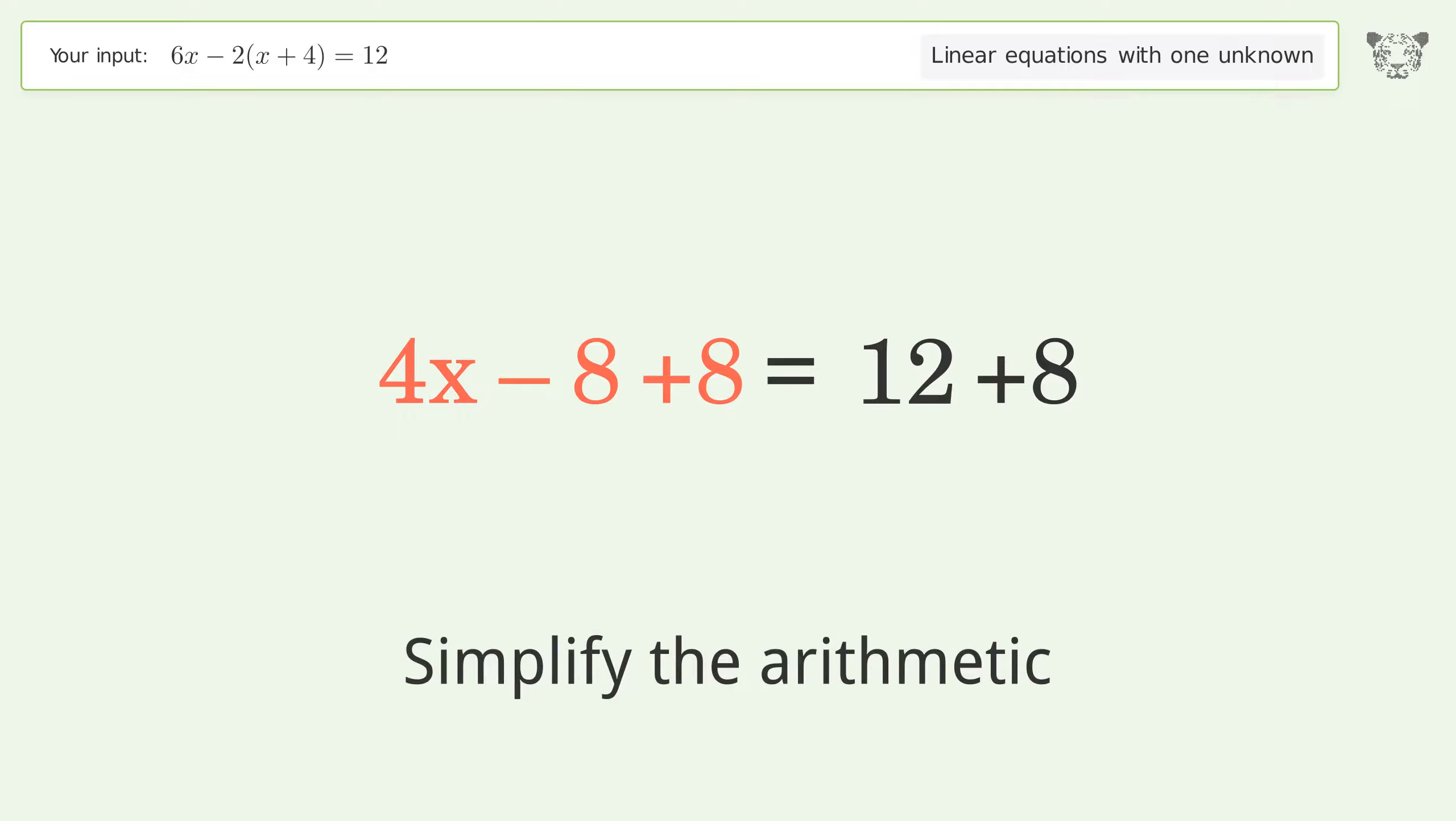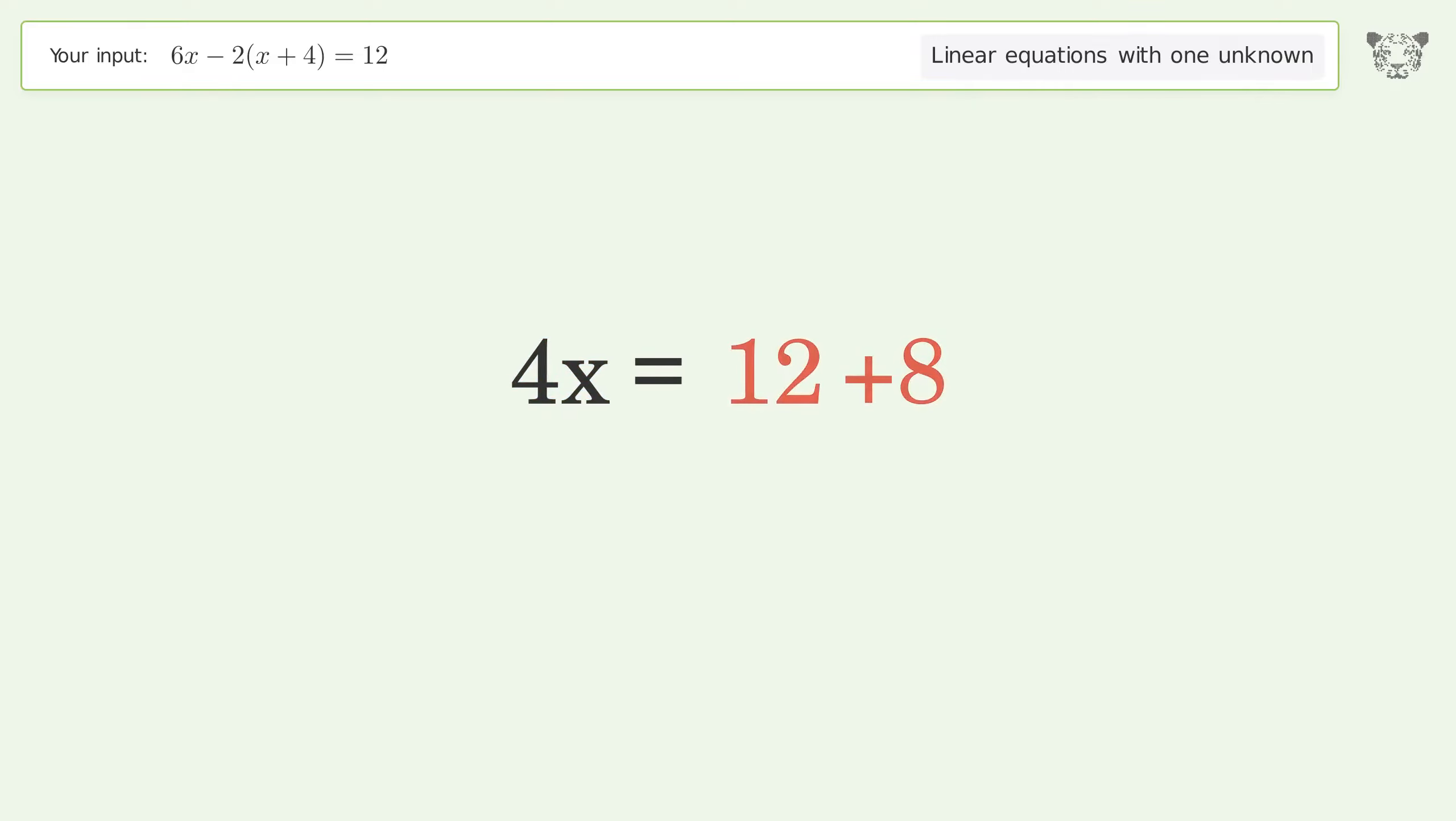Simplify the arithmetic. Isolate the x. Divide both sides by 4.